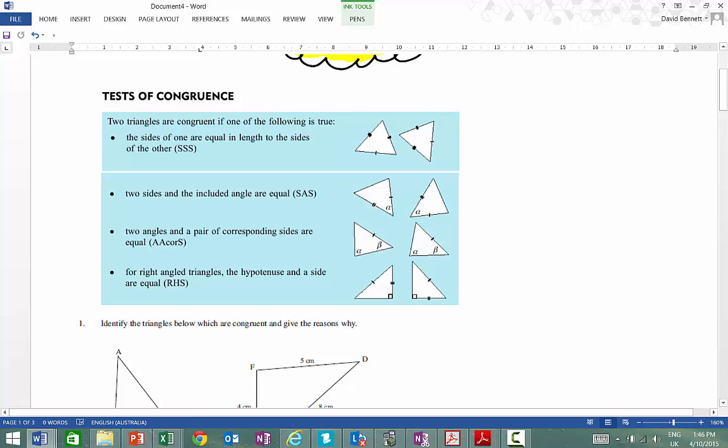Two triangles or two shapes are congruent if they are exactly the same. The first test is if all the sides are the same length, then they have to be exactly the same triangle. So you see in these examples here, they're just in different orientations.